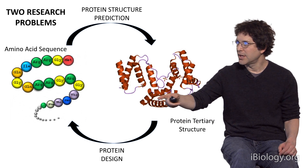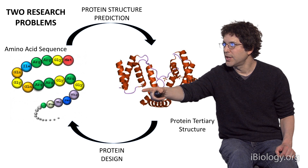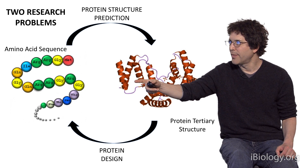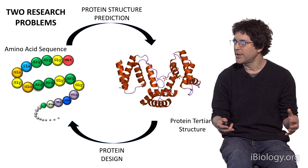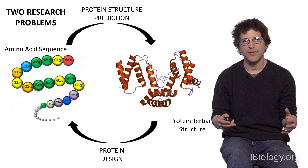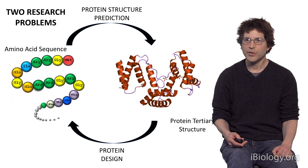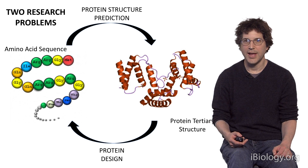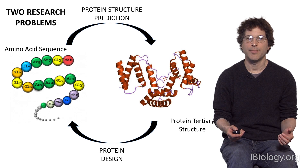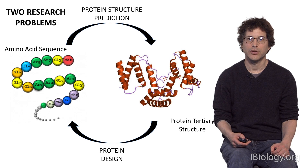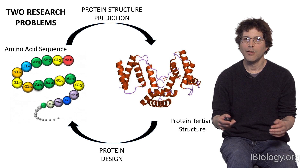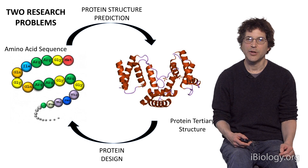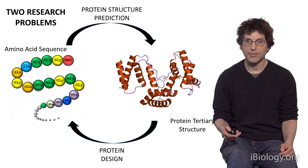The top arrow shows going from an amino acid sequence to a three-dimensional structure. In this case, we have a fixed amino acid sequence, and we have to find the lowest energy structure. The inverse problem is the protein design problem, which I'm going to focus on today. In this case, we don't start with a naturally occurring amino acid sequence or a naturally occurring structure. Rather, we start with a brand new structure that we'd like to make, and we go backwards to find an amino acid sequence which will fold up to that structure.